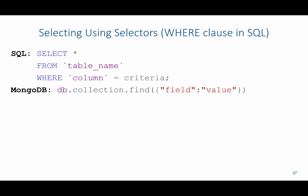In SQL, we would say SELECT * FROM the name of the table WHERE the column equals some criteria. In MongoDB, we would say db.collection.find, then the field that we're looking for, and then the value that we're looking for. Notice that this selector is in the first set of curly brackets rather than the second set, which is used to limit the specific columns we're interested in.